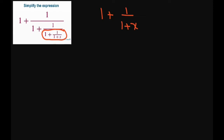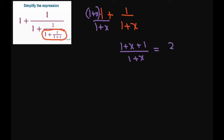So if we have that, we get the common denominator 1 plus x. So I have to multiply the numerator also by 1 plus x, times 1. This is going to give you 1 plus x plus 1 divided by 1 plus x, which simplifies to 2 plus x divided by 1 plus x.